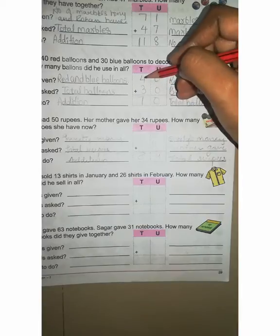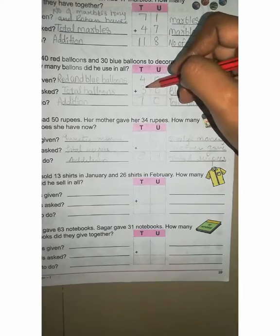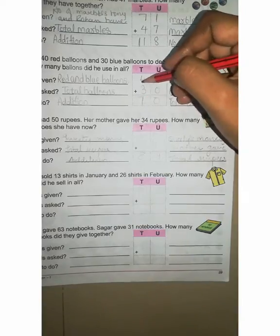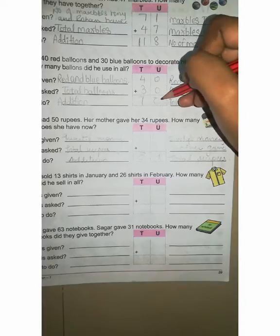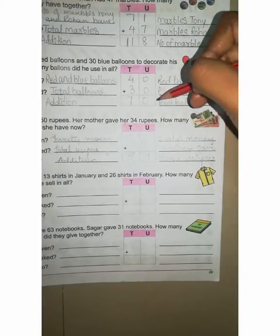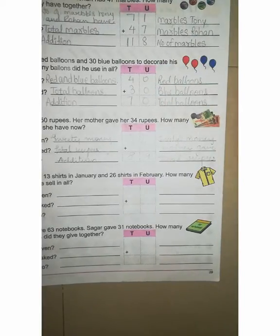4 plus 3, 7. Write 7. 40 plus 30, total how much? 70. Total balloons given.